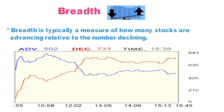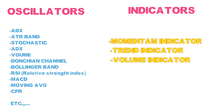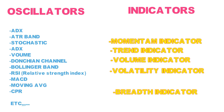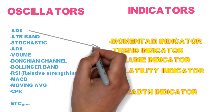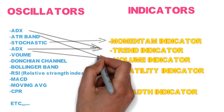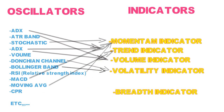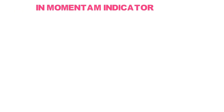So far we've learned how technical indicators form, about divergence, and the types of indicators. Now let's see how to select an oscillator. All oscillators perform based on these five indicator types. For example: ADX comes under trend indicator, ATR under volatility, Stochastic under momentum, Volume chart under volume indicator, Donchian Channel and Bollinger Band under volatility indicator.